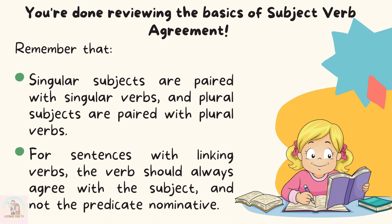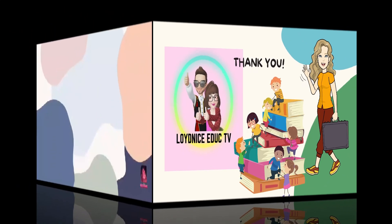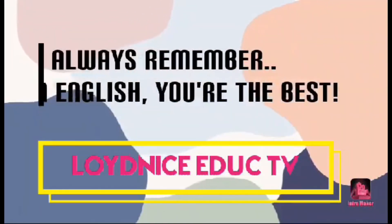Congratulations, learner! Now you're done reviewing the basics of subject-verb agreement. Remember that singular subjects are paired with singular verbs and plural subjects are paired with plural verbs. For sentences with linking verbs, the verb should always agree with the subject and not the predicate nominative. Thank you for joining today's class. I hope that you learned something from our discussion. Until next time, bye!